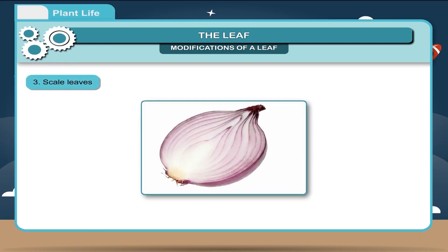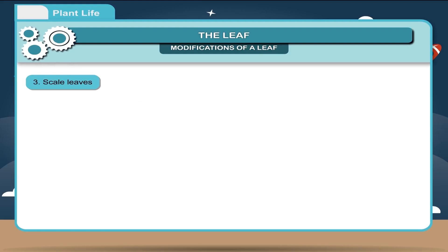Third, scale leaves. These leaves store food and water and become thick and fleshy. Example: onion.